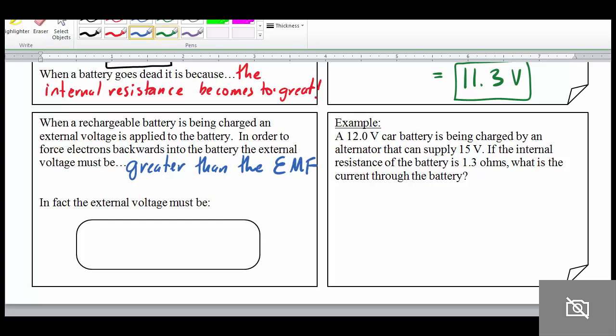Because otherwise, you won't be able to force electrons to go back into that battery. So in order to force electrons back in, the external voltage must be greater than the EMF. And so in this case, to calculate the terminal voltage, we could say that the terminal voltage when you're charging must be equal to the EMF plus the current times the internal resistance. Which is to say, the voltage you apply has to beat the EMF, and in addition to that, force the current through the internal resistor.